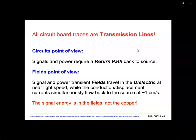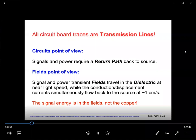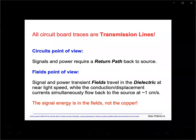When considering the field's point of view, we need to understand that signal and power transient fields travel in the dielectric space at near light speed, while the conduction and displacement currents simultaneously flow back to the source along the surface of the copper at about one centimeter per second. The important point is that the signal energy is in the fields, not the copper.